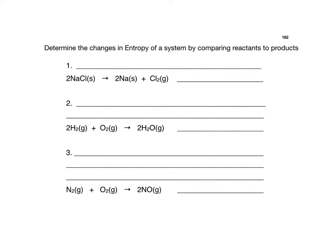Now let's look at three examples of trying to figure out if the entropy of the system from the reactant side to the product side shows an increase, a decrease, or possibly no change in entropy. Always start by comparing the phases of the reactants to the phases of the products. In example one, we start off with a reactant in the solid phase, and we end with at least one product as a gas. A solid substance has the least amount of entropy compared to a gaseous substance with the most. So in this system, we went from a solid to a gas — overall, the system has an increase in entropy.